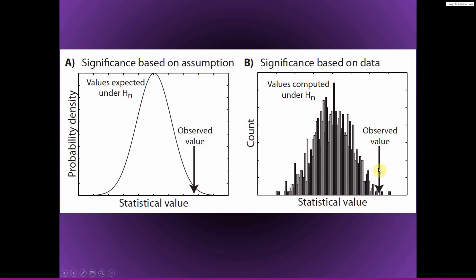Now you can compare the observed value from the real data — without any shuffling — to this null distribution. With typical parametric statistics, you assume the distribution looks Gaussian or whatever is appropriate. Here we don't make any assumptions; we just shuffle the data, run the statistics, and see what we get. If the observed value falls at the tail of this distribution, we can say it's very unlikely to occur given the null hypothesis, and we attach a p-value to it — for example, there's only a 1.3% probability of getting a statistic at least this extreme if the null hypothesis were true.